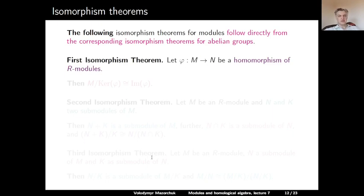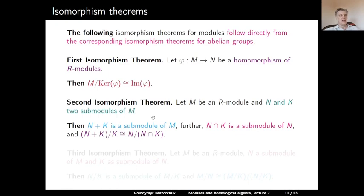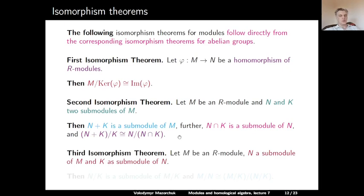With kernel and image established, we can state the isomorphism theorems — all following directly from the corresponding theorems for abelian groups. First isomorphism theorem: if φ: M → N is a homomorphism of R-modules, then M/ker(φ) is isomorphic to im(φ) as R-modules. Second isomorphism theorem: if N and K are submodules of M, then N + K is a submodule of M, N ∩ K is a submodule of N, and (N + K)/K ≅ N/(N ∩ K). Third isomorphism theorem: if K ⊆ N ⊆ M are R-modules, then N/K is a submodule of M/K and M/N ≅ (M/K)/(N/K).